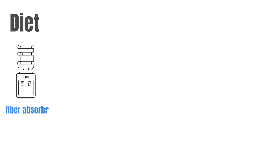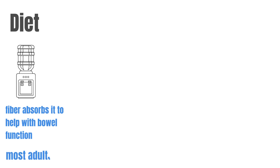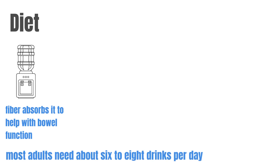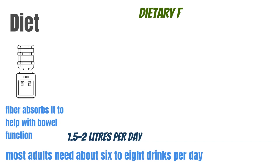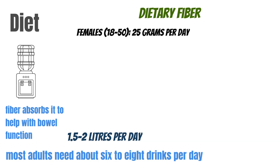Water. Water is the most important liquid that we consume. Fiber absorbs water and it helps bowel function, so you should ideally be drinking about six to eight drinks per day — that's one and a half to two liters per day. If you don't like drinking water alone, any fluid is fine. The less you have, the more constipated you get, the more pressure on the bowels, the harder stools become, and the more prone you are to developing diverticular disease.